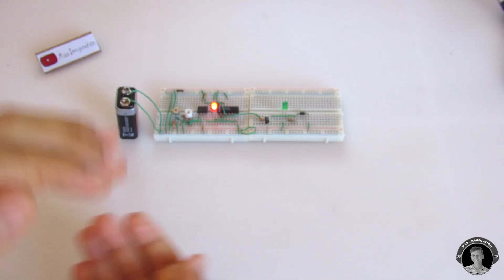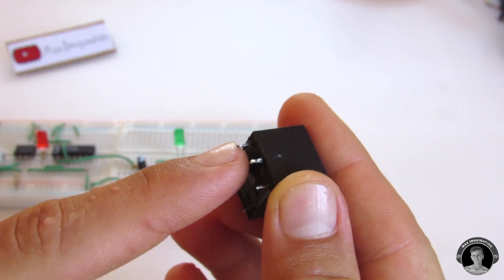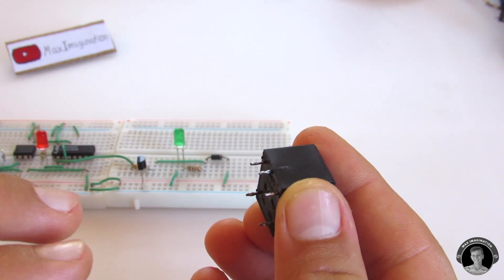In order to make this circuit more practical, we must add a relay so that we can control turning on and off a light bulb.